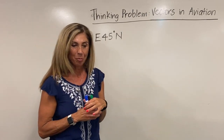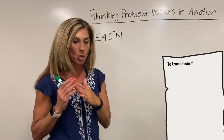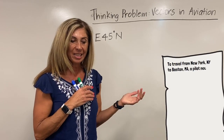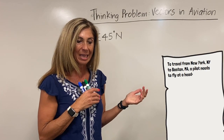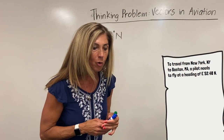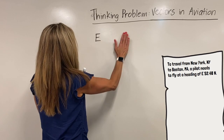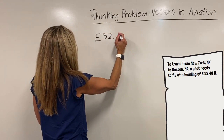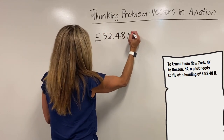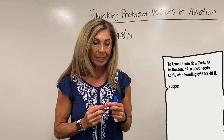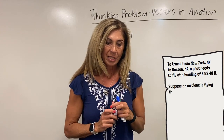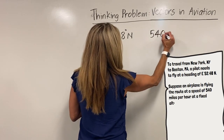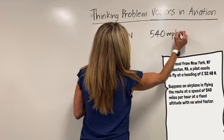The thinking problem is traveling from New York, New York to Boston, Massachusetts, where a pilot needs to fly at a heading of east 52.48 degrees of north. The plane is flying the route at a speed of 540 miles per hour. Remember, always write down the information that you've been given.